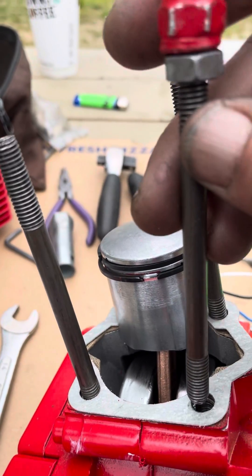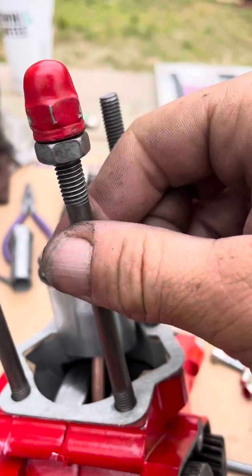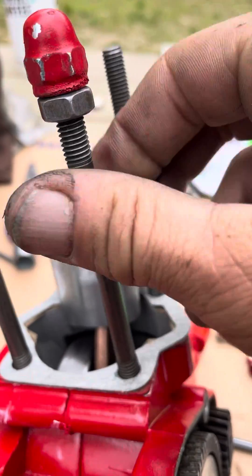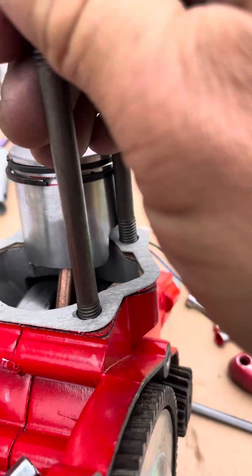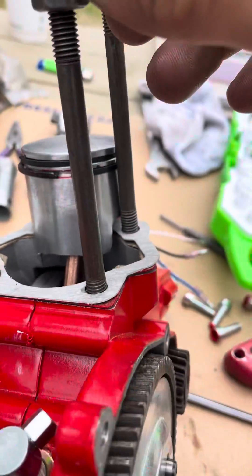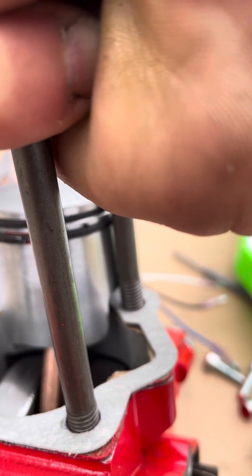You want to turn your bolt all the way in, and when you're at the base, when you can't turn it any further, you want to just come back a quarter turn, between a quarter turn and a half turn.